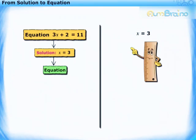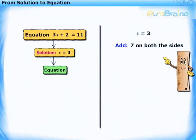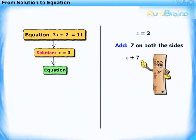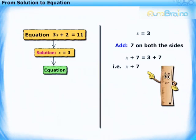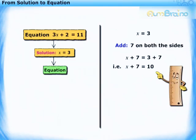Now we shall add same number, say 7, on both the sides. We get x plus 7 is equal to 3 plus 7. That is, x plus 7 is equal to 10.